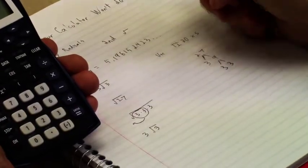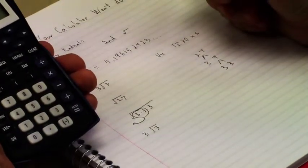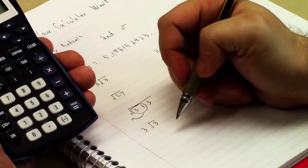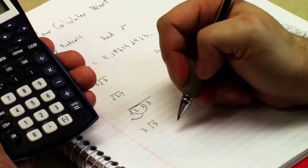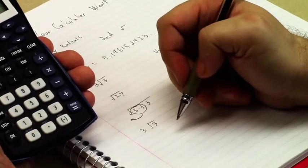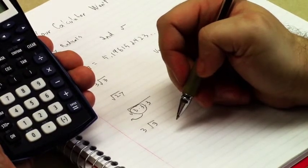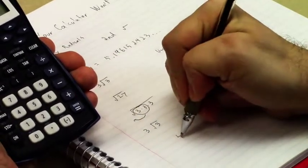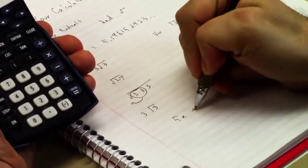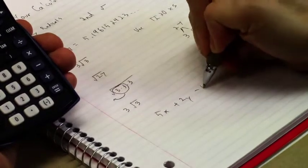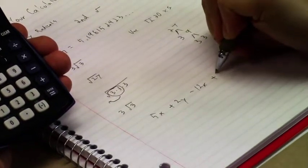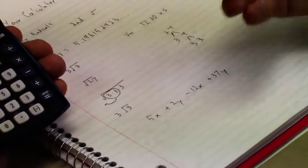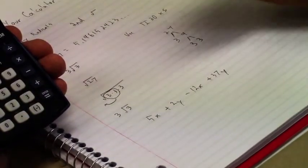The second thing that I get asked is how do you do variables in your calculator. As far as I know, there isn't a calculator that costs less than about $100 to $150 that can deal with variables. If you have a variable expression like 5x plus 2y minus 12x plus 37y, you're going to have to do the computation pretty much on your own.